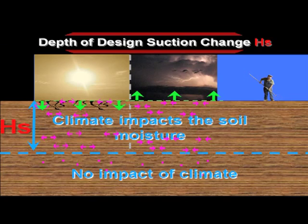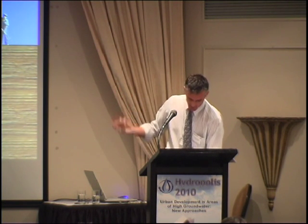I'd like to detail the parameter used in the standard called the depth of design suction change, HS. Here is our soil profile — summer, winter, the farmer gives the scale. In summer the clays shrink and the ground surface goes down; in winter the opposite occurs. There is a depth from which the climate does not impact ground moisture content, and so beneath this depth there is no shrinkage and swelling. This depth is HS — the depth to which the climate impacts ground moisture.